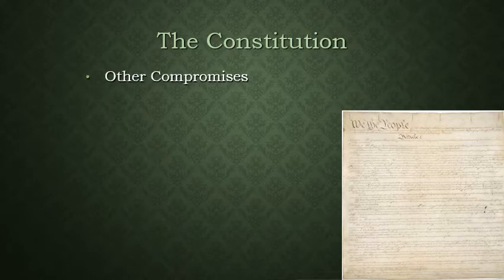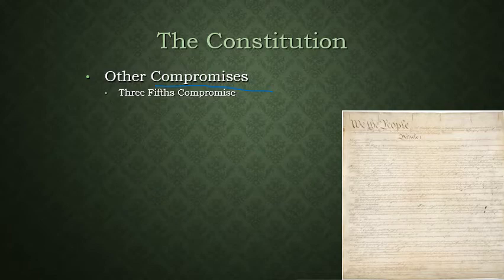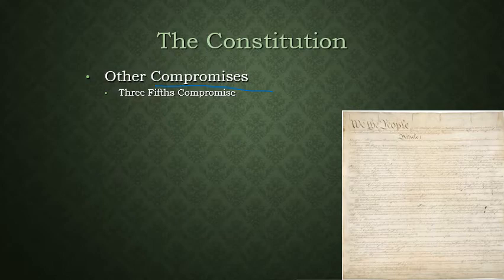In order to create the Constitution, other compromises had to be made. One of the big other compromises is something known as the Three-Fifths Compromise. One of the big issues in the colonies, a growing issue, is slavery. The north isn't so dependent on it; the south is very dependent on it. More and more northerners are calling for slavery to end. The Three-Fifths Compromise basically states that every slave would count towards three-fifths of one person in that state's population.